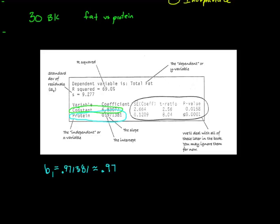Right next to the word protein is the slope. So what we have here is our formula is that fat predicted is equal to 6.83077 plus 0.97 times protein. If I take the protein in a sandwich, I times it by 0.97 and add the 6.83077, and I'll get how much predicted fat the sandwich is supposed to have.